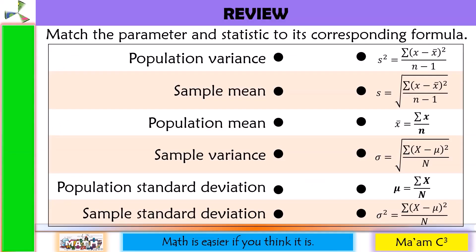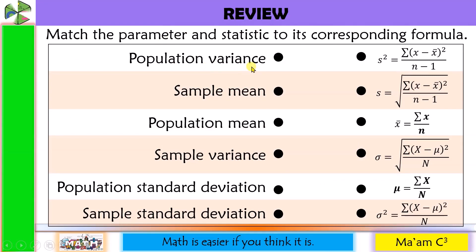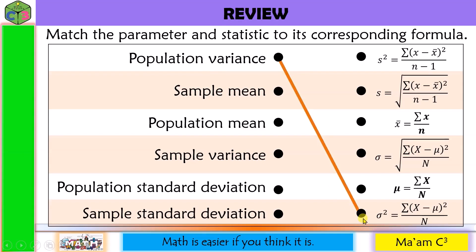Let's have a quick review of our previous lesson. Match the parameter and statistic to its corresponding formula. Number 1: population variance. If it is variance, we are looking for a variable raised to the second power. And since this is population, we are looking for a Greek letter. So this is the answer.